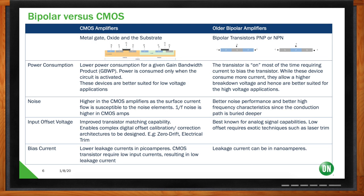Lastly, bias current — this is a big one for bipolar. Leakages are in the nanoamperes range for bipolar amplifiers. For CMOS, it is in the picoamps — really low. A lot of this has to do with the basic process and transistor design. They require very low input currents, so leakage is low as well. That plays into accuracy because leakage or bias current manifests itself again as error.